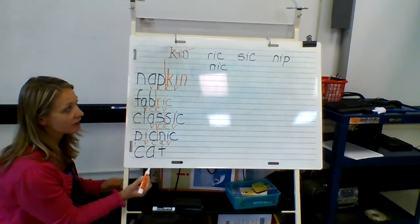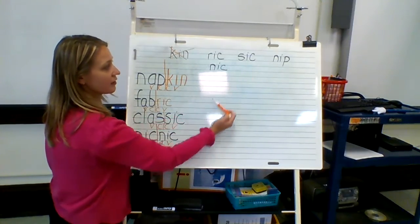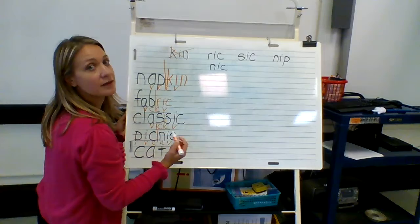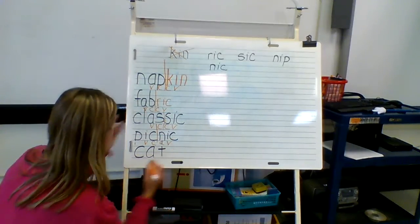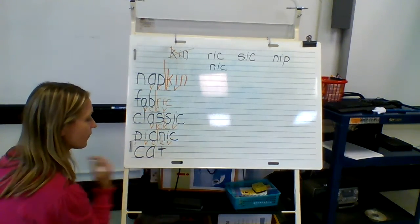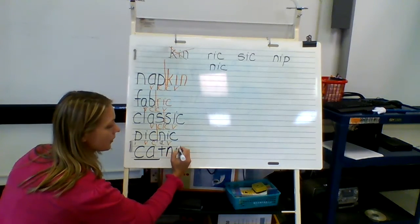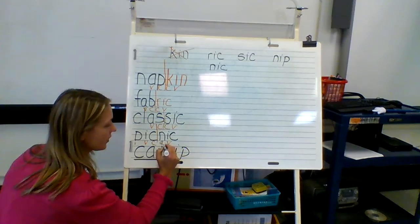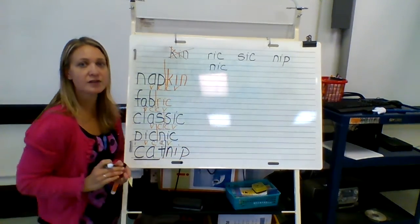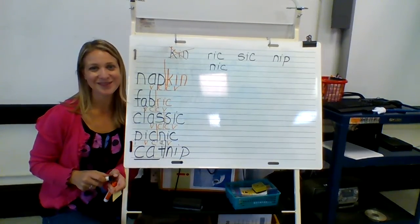Next we have 'cat.' So what's going to make a word here — cat-rick, cat-sick, cat-nick, or cat-nip? It's going to be catnip. Cat-nip — divide right between the double consonants there. So that's just more practice with dividing words into syllables, or word parts.